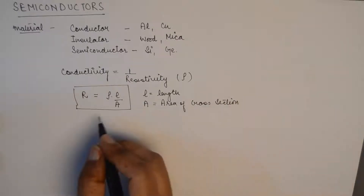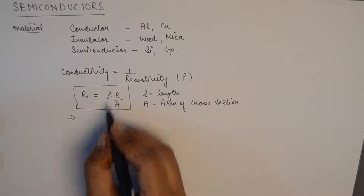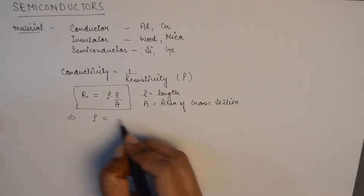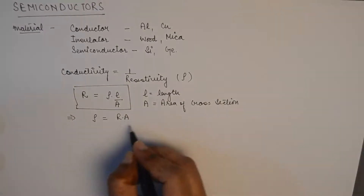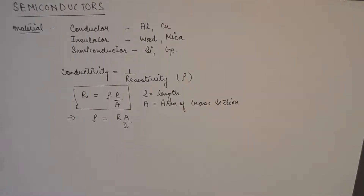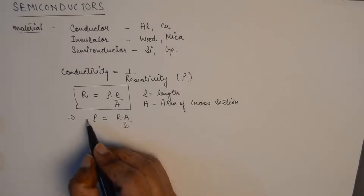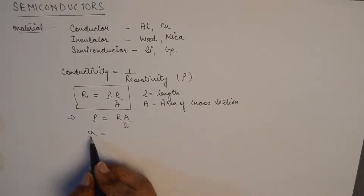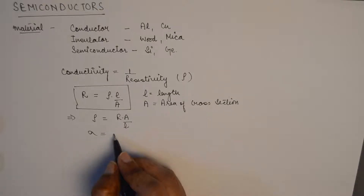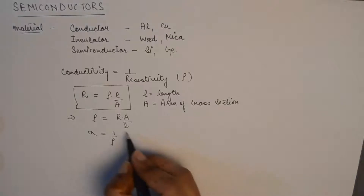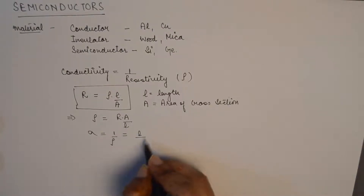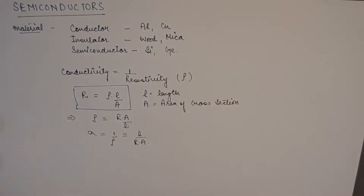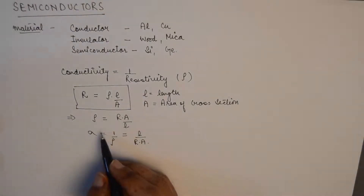From this expression we can get the value of resistivity rho, which equals R times A over L. Conductivity, denoted by sigma, being the inverse of resistivity rho, gets the formula L over R times A.